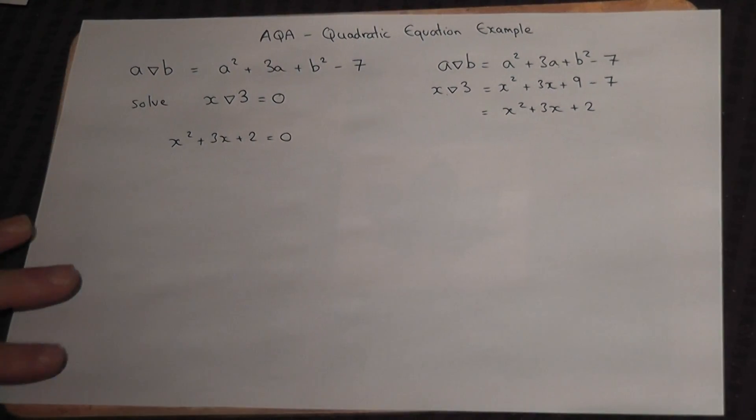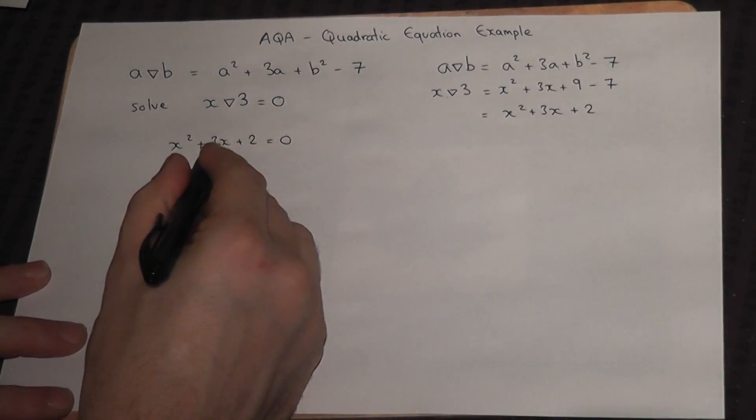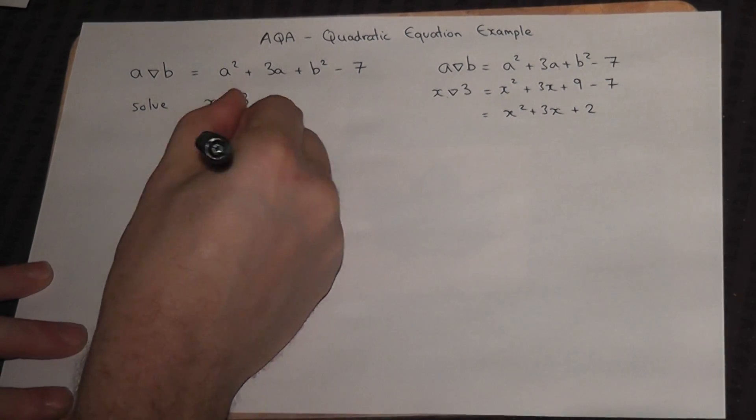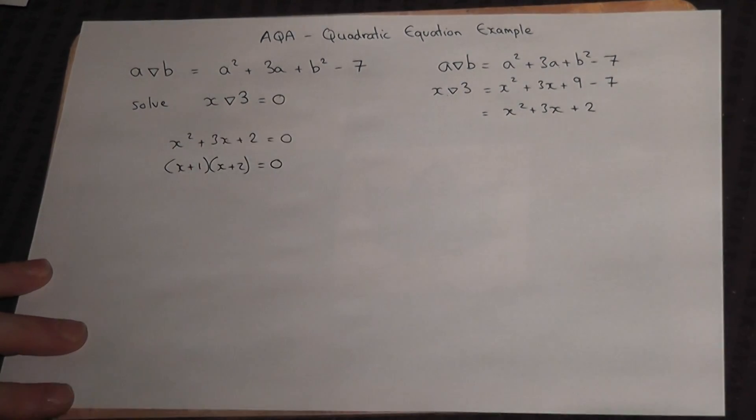Now this can factorise. 1 times 2 is 2. 1 plus 2 is 3. So x plus 1, x plus 2, must equal 0.